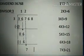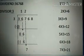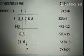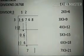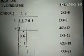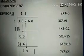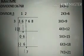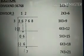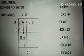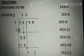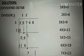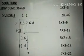We write 2 in the quotient and 6 below the 6. Now we subtract 6 from 6 — same number, so we get 0. Next I bring down the next digit, 7.